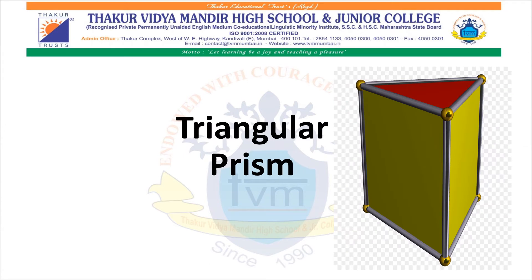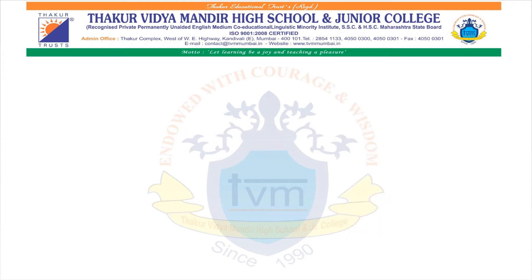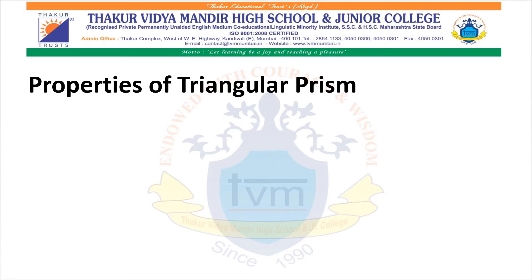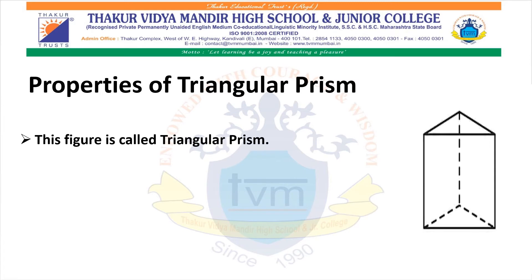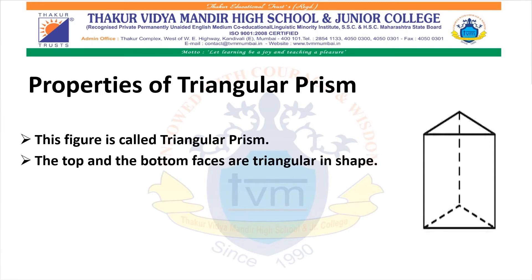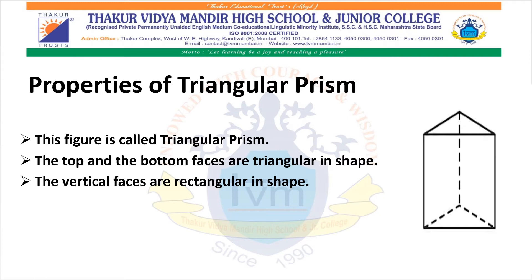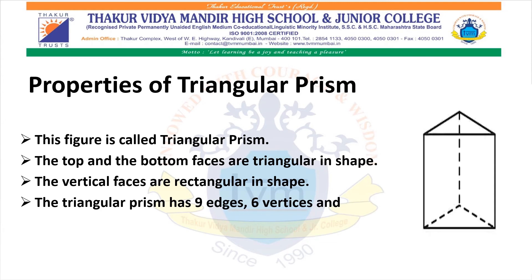Triangular Prism. Properties of Triangular Prism: This figure is called a Triangular Prism. The top and the bottom faces are triangular in shape. The vertical faces are rectangular in shape. The triangular prism has 9 edges, 6 vertices and 5 faces.